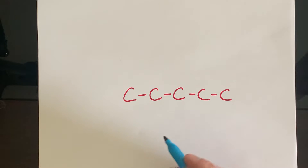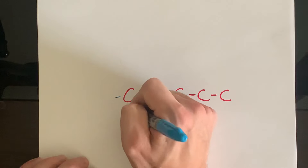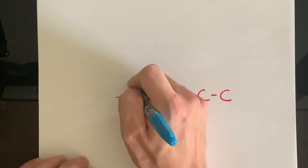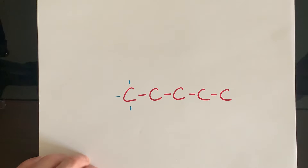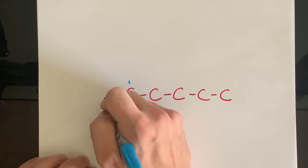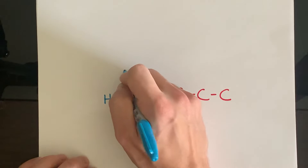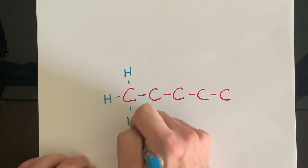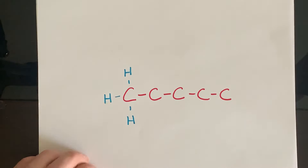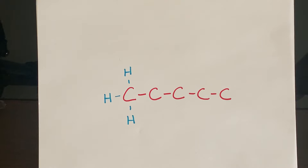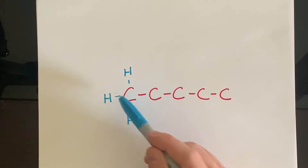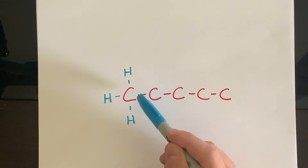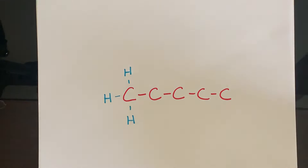In order to have four bonds, we have to add three hydrogens to that first carbon — there's one, there's two, and there's three. So all of those hydrogens are attached to our number one carbon. If you look now, we have four bonds: one, two, three, four bonds, just like carbon needs.